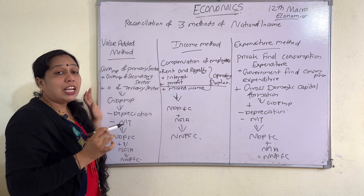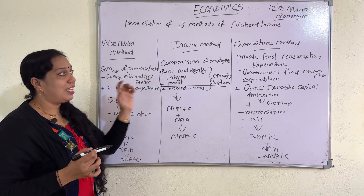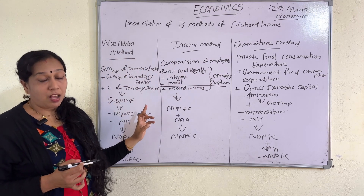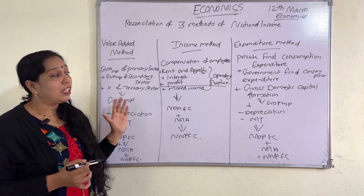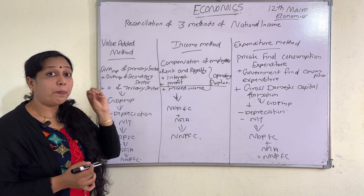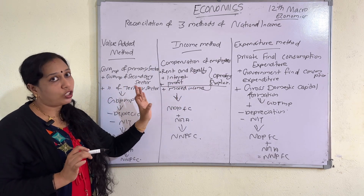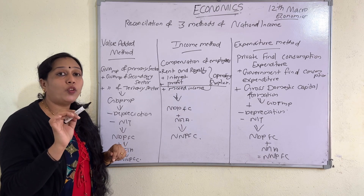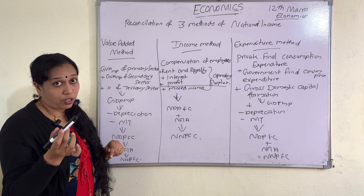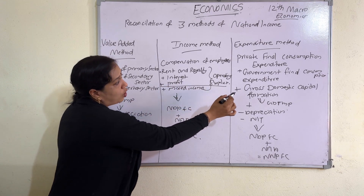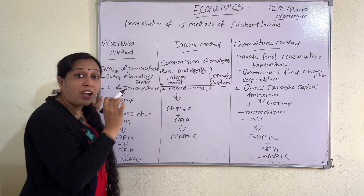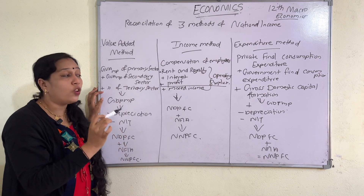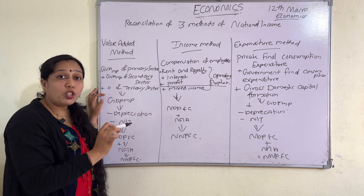The next method is the expenditure method. To find national income through the expenditure method, the formula is: private final consumption expenditure plus government final consumption expenditure plus gross domestic capital formation. Gross domestic capital formation equals net domestic capital formation plus depreciation, or they may give it directly. If gross fixed capital formation is given, add change in stock to get gross domestic capital formation. Adding all three gives you GDP at market price (GDPMP).